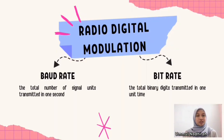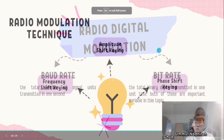Next, we will learn about Radio Digital Modulation. To start off, let's get to know baud rate and bit rate. The baud rate refers to the total number of signal units transmitted in one second, while the bit rate refers to the total number of binary digits transmitted per unit time. Both of these are important variables in this topic.